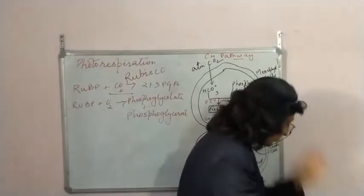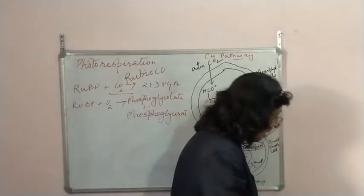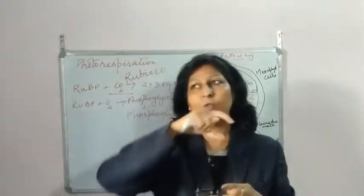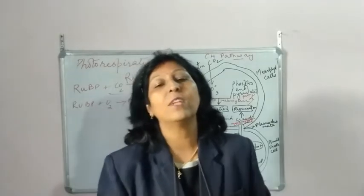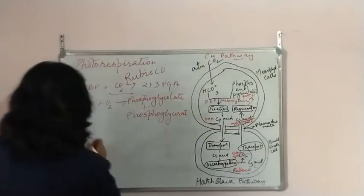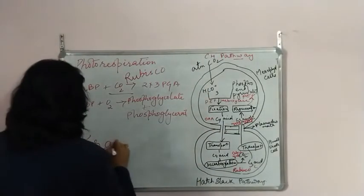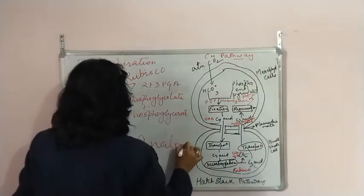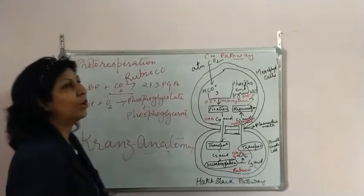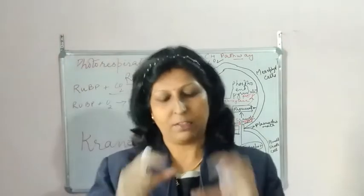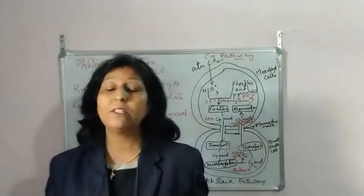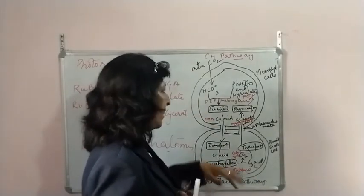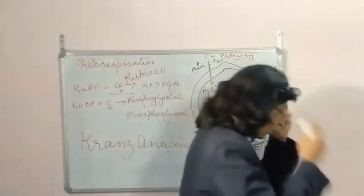The arrangement where thick bundle sheet cells like a wreath surround the vascular bundles is known as Kranz anatomy. This is a characteristic feature of C4 plants.